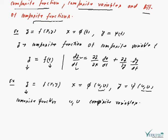Since z is the composite function and u and v are the composite variables, we can partially differentiate. We can calculate del z over del u.